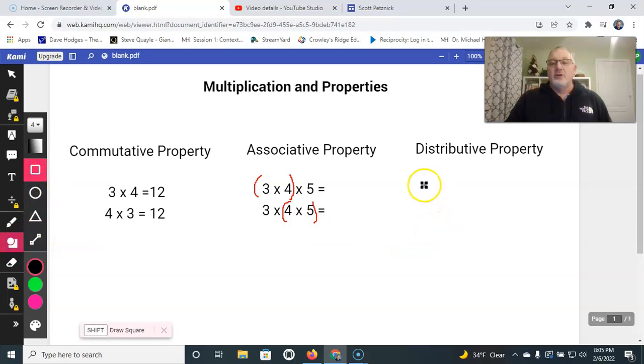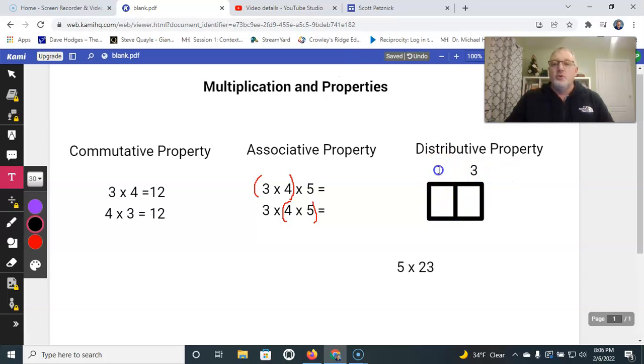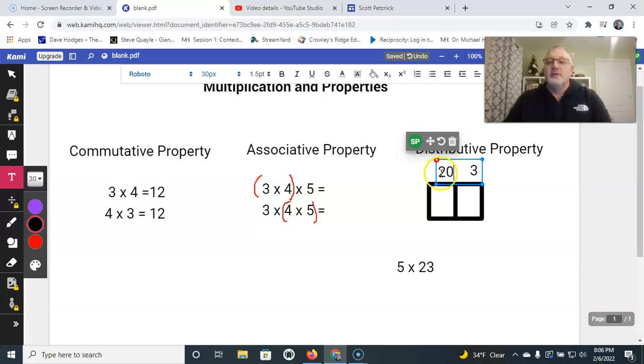And again, we use that here when we did our multiplication. So if I'm going to, let's just go ahead and make one really super fast here. Again, if I'm going to multiply, let's say, five times 23. I take the three and I move the three up here. And then I turn the two into a 20, using my expanded form.